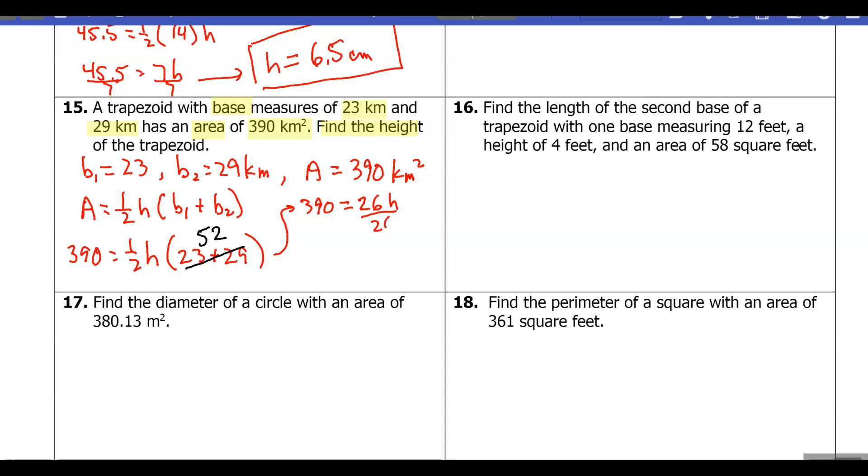So then half of 52 is going to be 26, so it's going to be 26 times h. I'll divide both sides by 26, and I end up with h equals 15 kilometers.